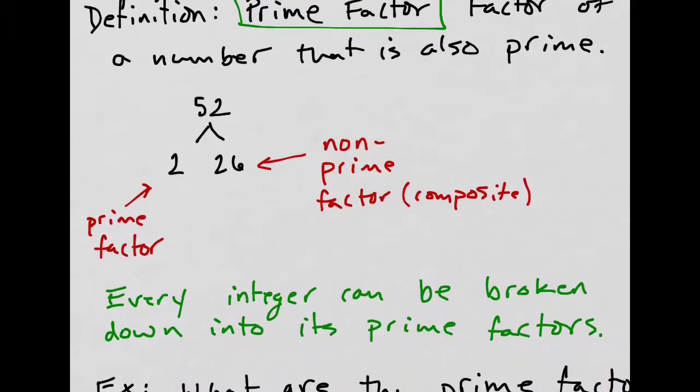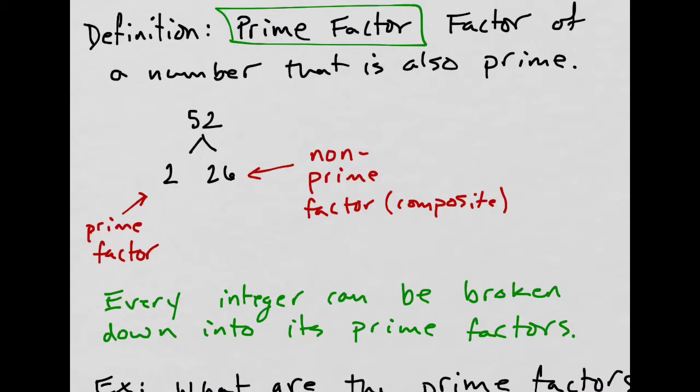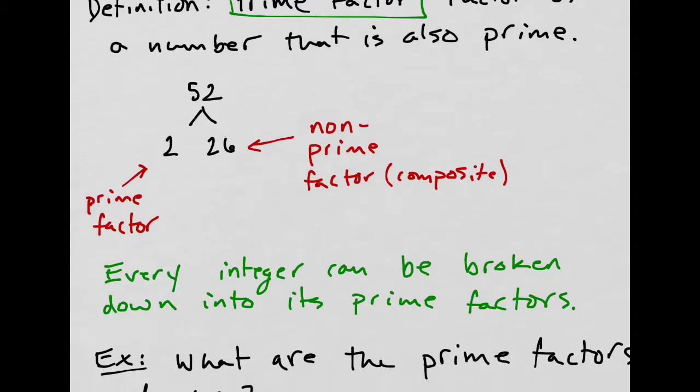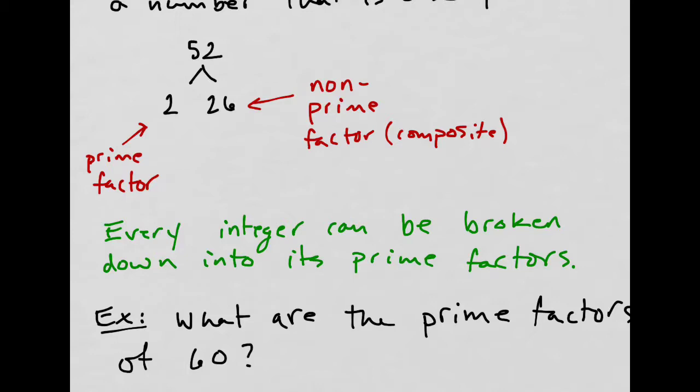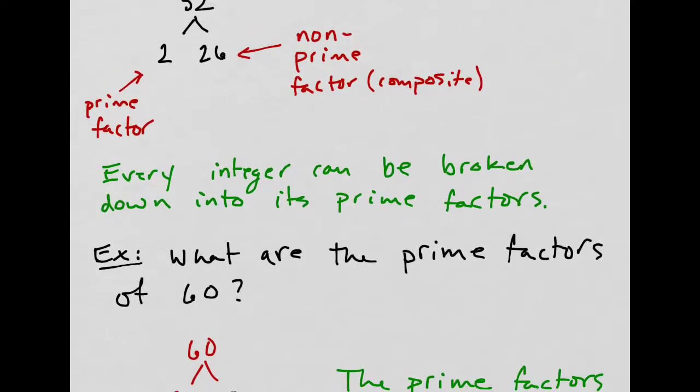Every integer can be broken into its prime factors, except for prime numbers, which is just 1 and itself. If it's prime already, then you don't need any prime factors. 2 is a prime factor because it's prime and it's also a factor. Very clear definition, very clear term.